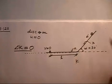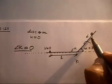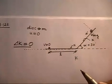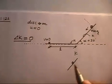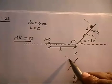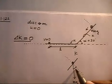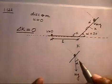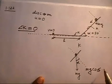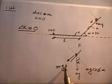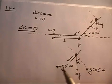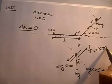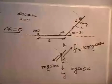On the inclined plane, the gravitational force mg acts downward. Drawing the perpendicular, the component along the incline is mg sinα and the normal component is mg cosα. Since the disk slides down, friction acts upward along the incline, and its value is k·mg·cosα, since the normal reaction is mg cosα.